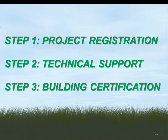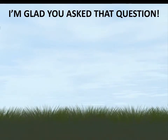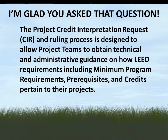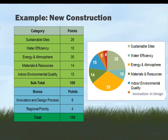Step two is technical support — you receive a reference package, credit inquiries, and rulings. Step three is the actual certification of the building, which comes only after documentation submittal and USGBC review. CIR means Credit Interpretation Request, or Credit Interpretation Ruling depending on whether it's before or after. You get access to previous rulings that may match your design question, so you might already have an answer based on someone else's project, which saves time and money.